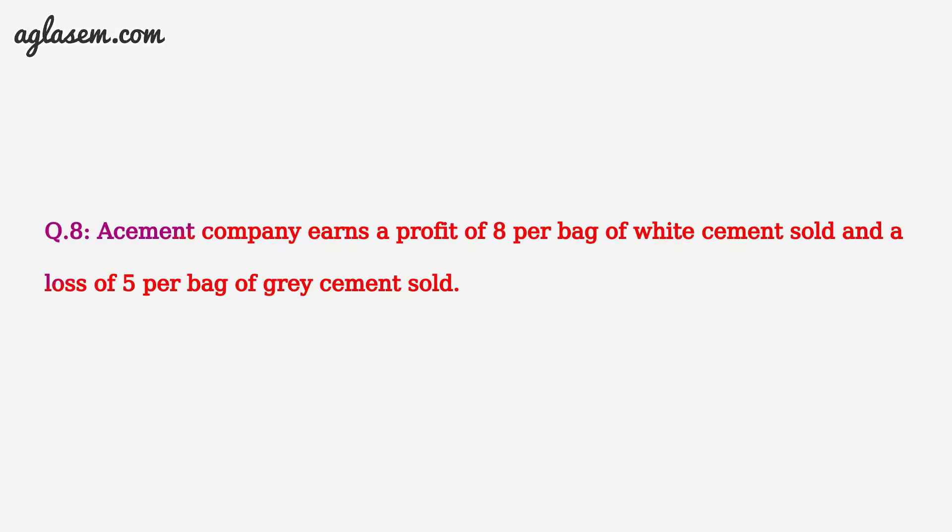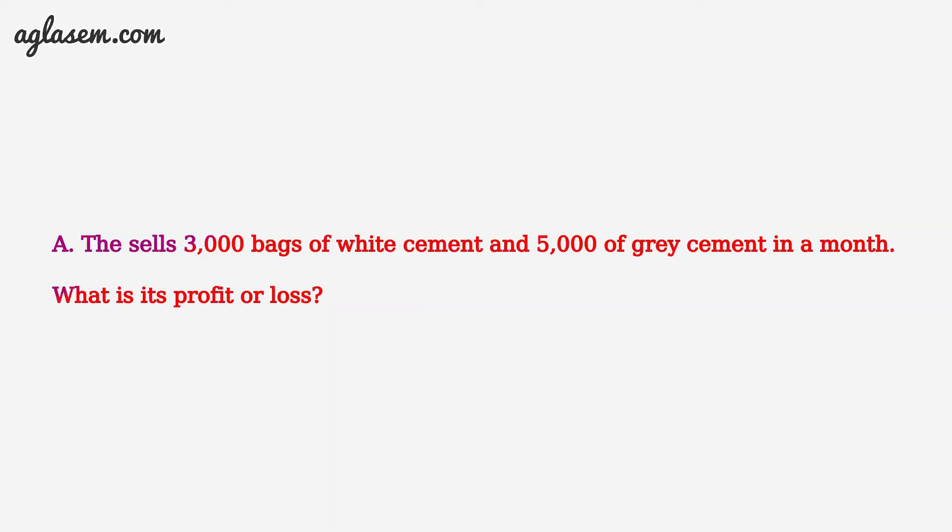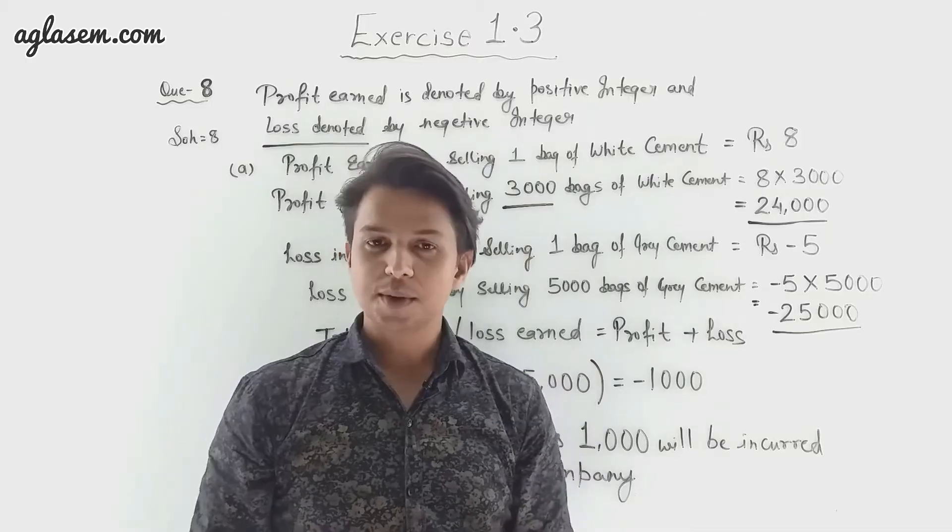Moving to Question Number 8: a cement company earns a profit of 8 rupees per bag of white cement sold and a loss of 5 rupees per bag of grey cement sold. Part one: the company sells 3000 bags of white cement and 5000 bags of grey cement in a month. What will be the profit or loss?